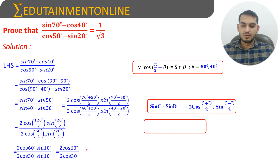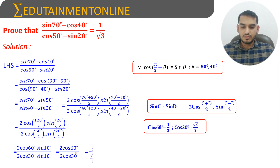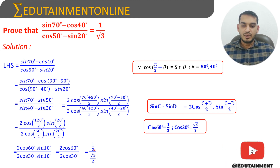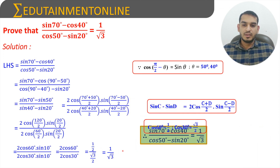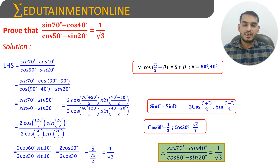We know that cos 60 degrees equals 1 by 2 and cos 30 degrees equals root 3 by 2. Substituting, that will be 1 by 2 divided by root 3 by 2. The 2s in the denominators cancel, so the answer is 1 by root 3. Therefore, sin 70 degrees minus cos 40 degrees divided by cos 50 degrees minus sin 20 degrees equals 1 by root 3.